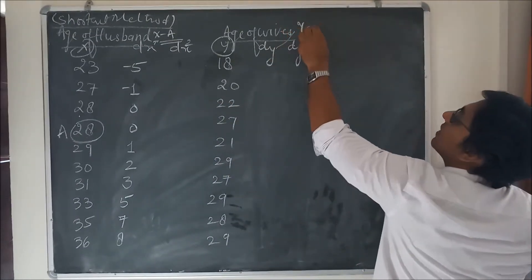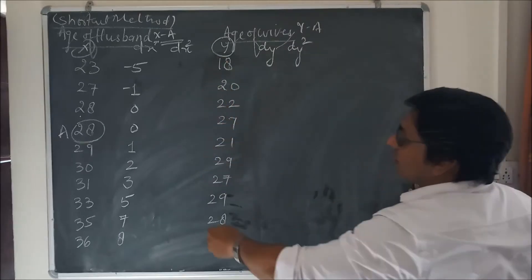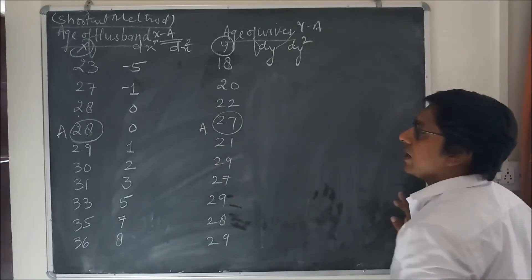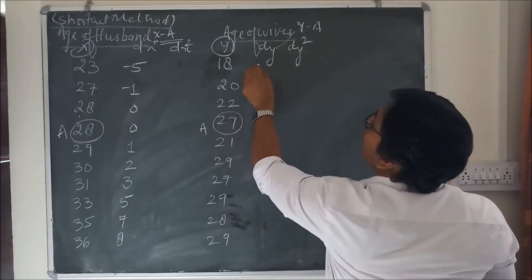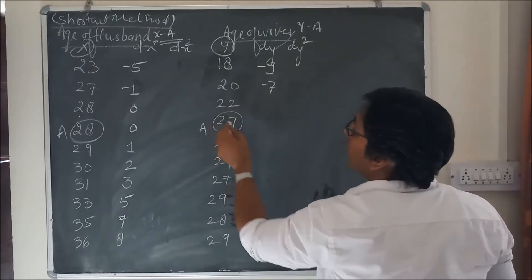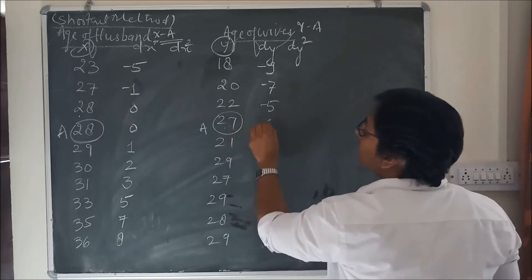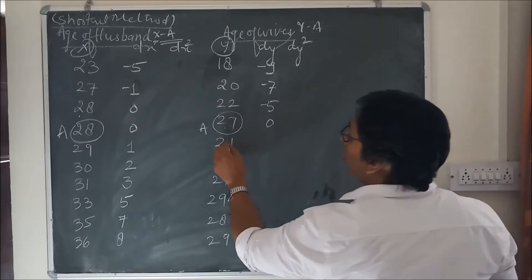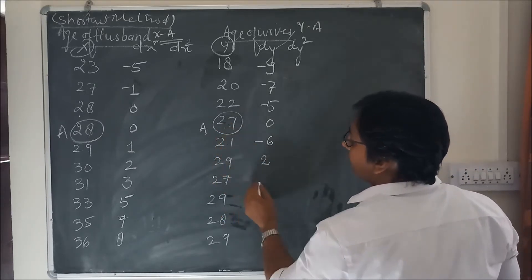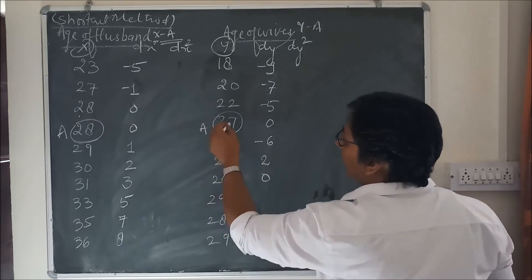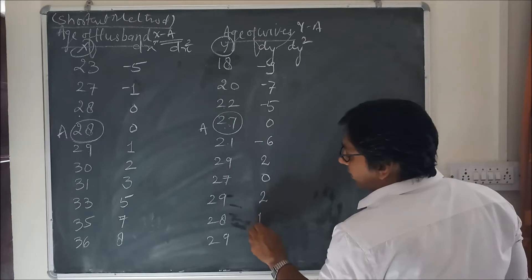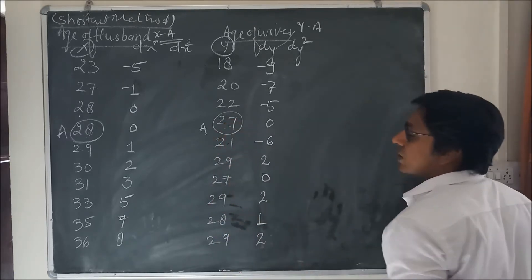Similarly we calculate dy as y minus a. I assume 27 as a. So: 18 minus 27 = minus 9; 20 minus 27 = minus 7; 22 minus 27 = minus 5; 22 minus 27 = minus 5; 27 minus 27 = 0; 21 minus 27 = minus 6; 29 minus 27 = 2; 27 minus 27 = 0; 29 minus 27 = 2; 28 minus 27 = 1; 29 minus 27 = 2.